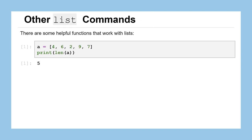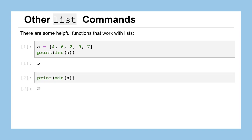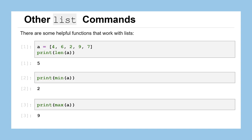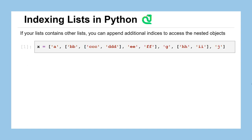There are a few other helpful list commands. The len function that we've used with strings works the exact same way with a list — you can quickly compute how many things are in a list, and here we can see we've got five elements. You can use the function min — M-I-N — and assuming your list contains all numerical values, it'll give you the lowest value. If it were all strings, min would give you the first one that comes alphabetically. The opposite of that is max, which returns the largest numerical value in your list, or the last item alphabetically for a list of strings.